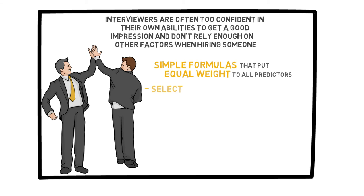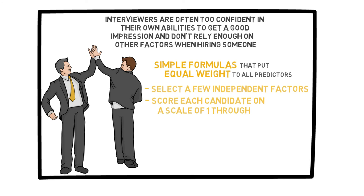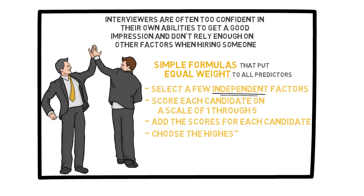He says that simple formulas that put equal weight to all predictors are often superior in such comparative decisions. Specifically, he suggests selecting a few relatively independent important factors — typically 6 is a good number. You then score each candidate on a scale from 1 to 5 for each of those factors. Remember that in order to avoid the halo effect, you should score each category independently from all the rest. If you are scoring for category 3, only focus on category 3, not on the person's performance in the previous two categories.